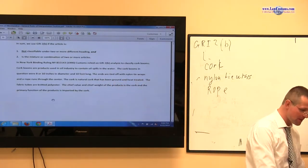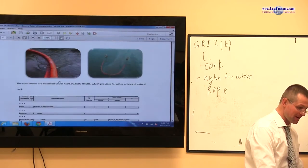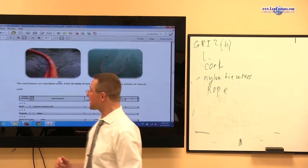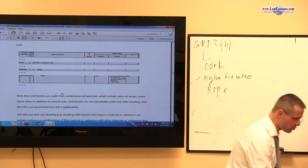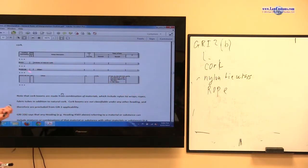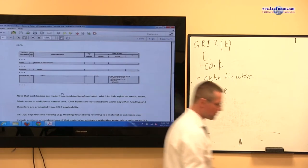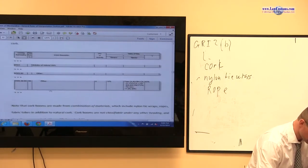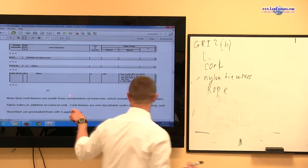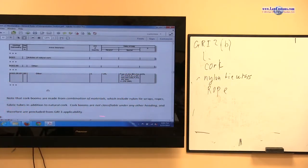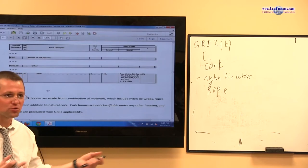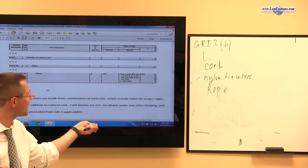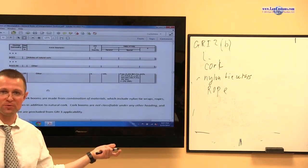So what do customs officials say? Well, customs officials say this is article of cork, or most specifically, article of natural cork. Even though cork booms are combination of materials, they are not classifiable under competing headings. What are the competing headings? Articles of rope. It's not article of rope. Articles of nylon. It's not article of nylon.